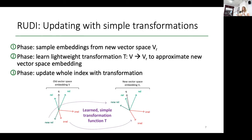This is the concept RUDY which we propose. With RUDY, we would have three phases. The first phase would be to sample embeddings from the ideal new vector space embedding, and then use those samples to learn a lightweight and simple transformation between the old and the new vector space. This transformation should then approximate the new embeddings given the old embeddings from the old vector space. With this transformation, one could update the whole index from the old vector space to the new vector space in a very lightweight and simple way, and therefore possible in real time.